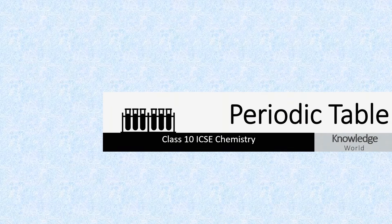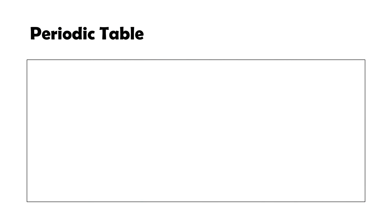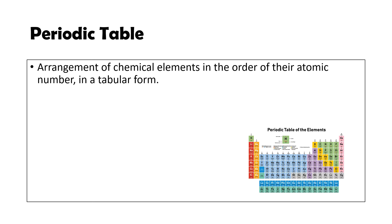Hey guys, welcome to our channel Knowledge World. In this video we'll be learning the first chapter of Class 10 ICSE Chemistry: the periodic table. The periodic table is an arrangement of chemical elements in the order of their atomic number, electronic configuration, and recurring chemical properties in a tabular form.